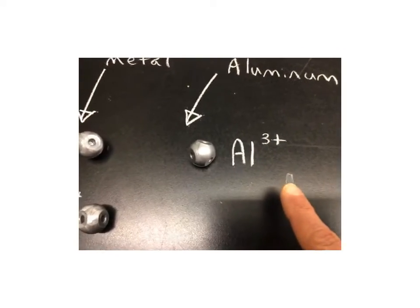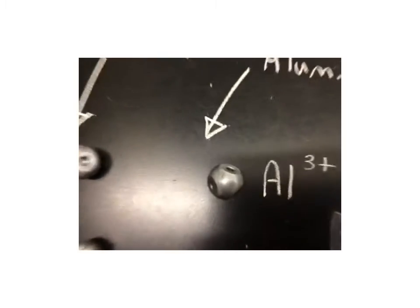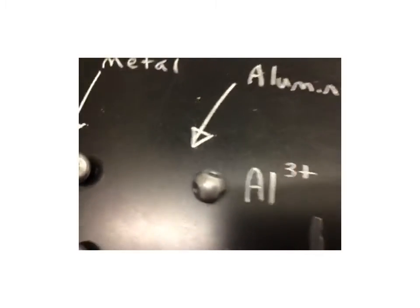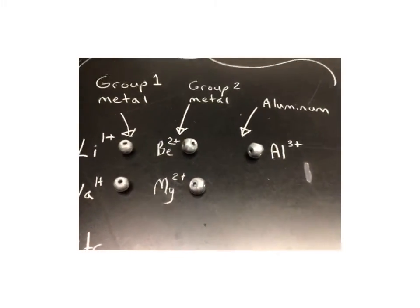Aluminum has three holes in it, as you can see, one, two, and three, three electrons that it gives away.